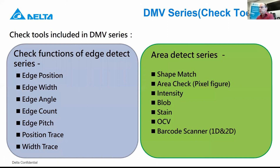What can you do with the DMV series? Of course, you can find edges, measure the width, measure angles between edges, count edges, pitches, position, the width of a trace. But you can also do shape matching, check on shapes, area checking — checking how many pixels, black or white, are in an area — intensity, blob, which is a clustered group of black or white pixels, stain, OCV for verifying characters, but also barcode reading, 1D or 2D. Those are all the functions that are standard available in all three DMV controllers.